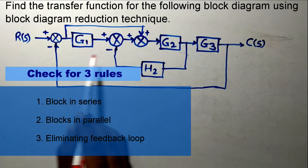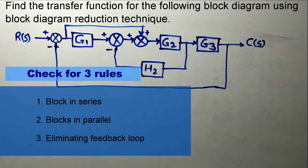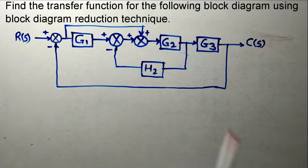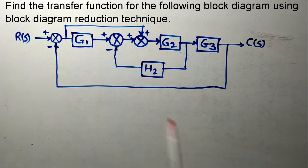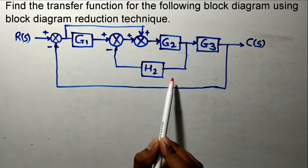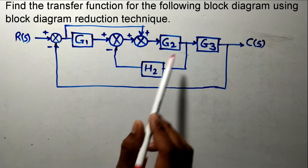Find here that there is no block which is in cascade. Also, there is no block which is in parallel, meaning you cannot directly apply any rule here. Let us move toward the third rule — whether there is a feedback loop or not.